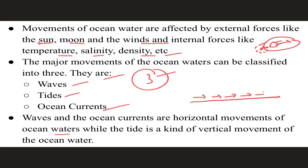In this movement, they are moving forward horizontally with force, speed, and pressure. However, the tide is a kind of vertical movement of ocean water. The tide movement is very much vertical.